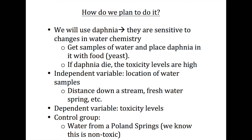The independent variable in this research is the location of the water samples — for example, the beginning of a stream versus the end of a stream, or a freshwater spring. The dependent variable is the toxicity levels. The control group we will use is water from a Poland Springs bottle, because we know that this water is non-toxic.